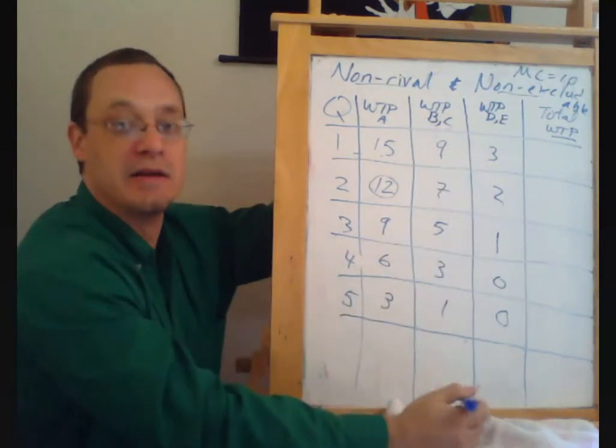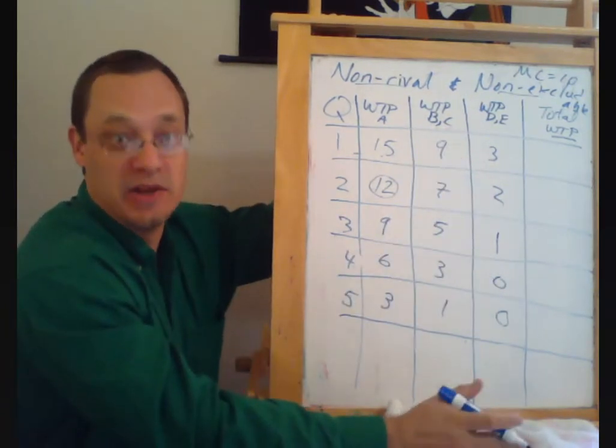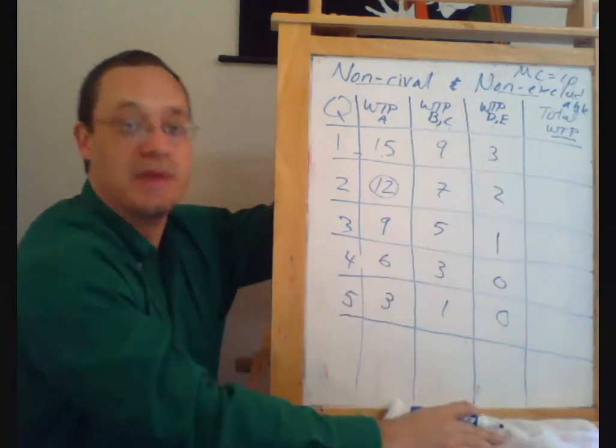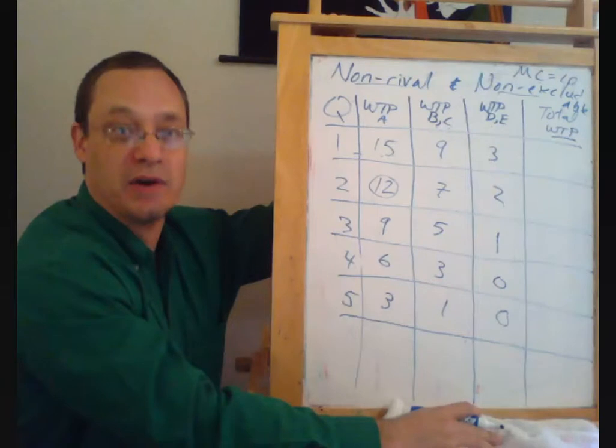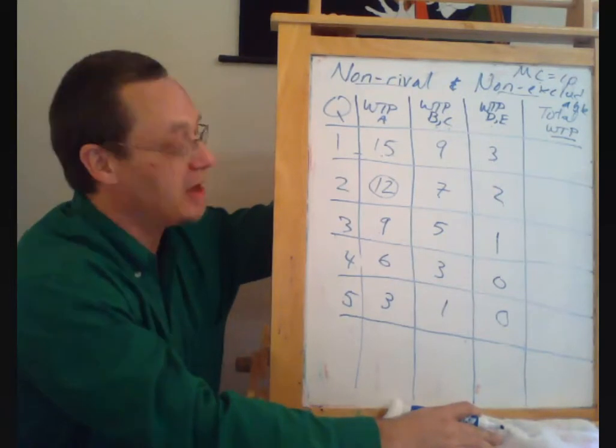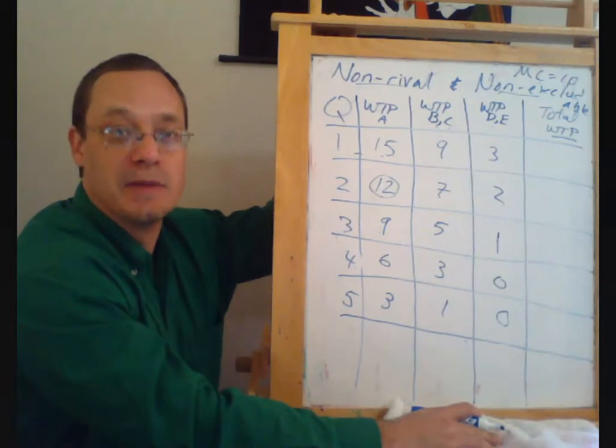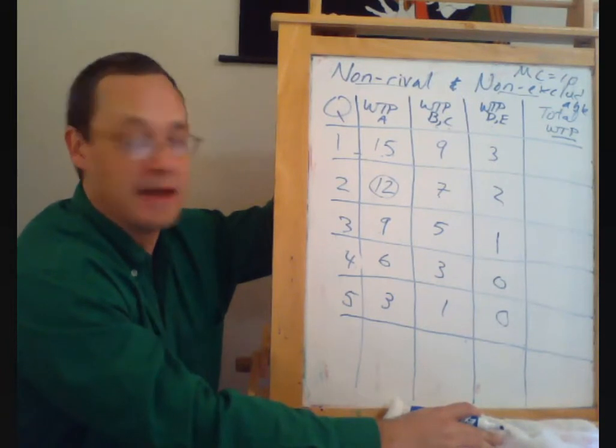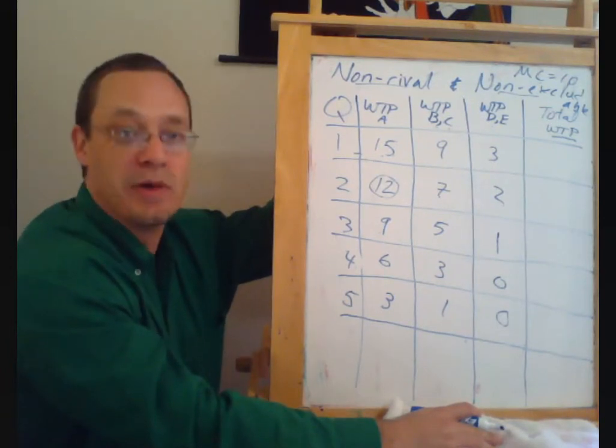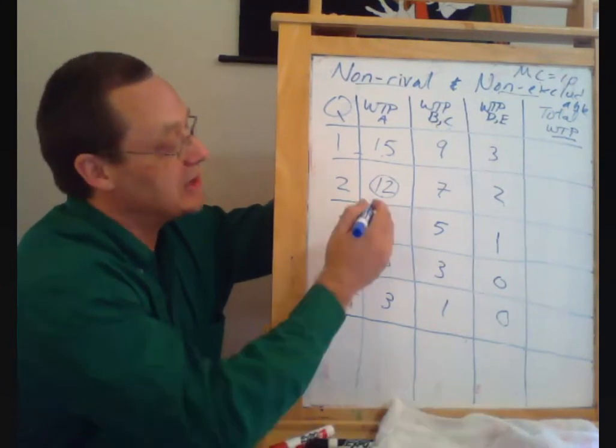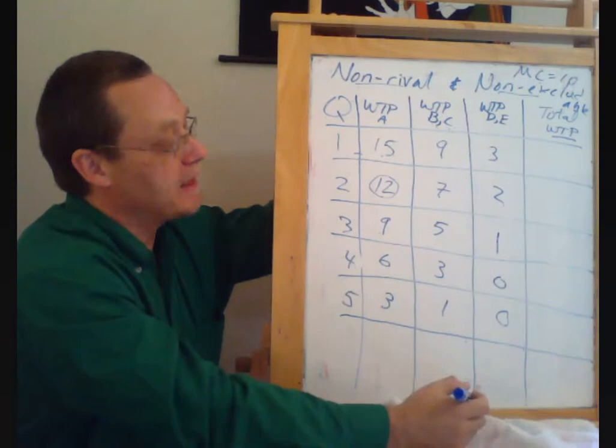People B and C are not willing to pay, at least independently, for any street lights, and definitely not people D and E if they have this marginal cost of $10 per street light. So in the absence of some sort of coordinating plan, if we just looked at what we might call a market equilibrium here, we're going to see that the quantity is going to be two.